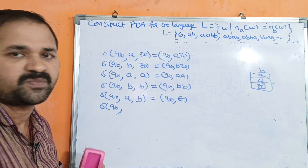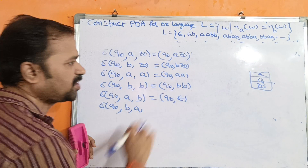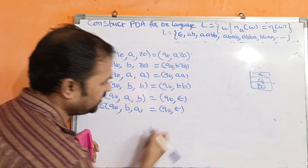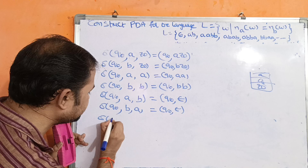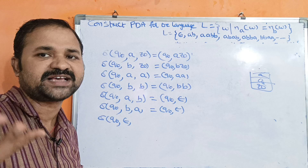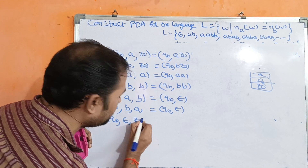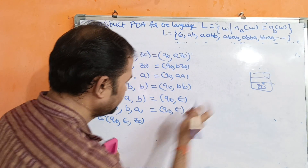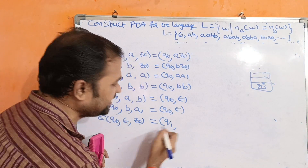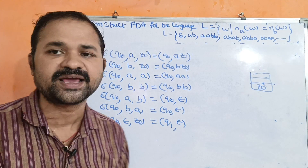The last case: δ(Q0, B, A) — input is B and top of stack is A, so perform the pop operation: (Q0, ε). And the final transition: when the input string is completely processed, every string ends with epsilon. So δ(Q0, ε, Z0) — if the stack is empty (Z0 on top), we transition to the final state Q1: (Q1, ε).